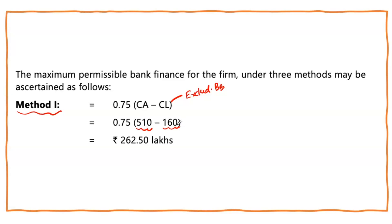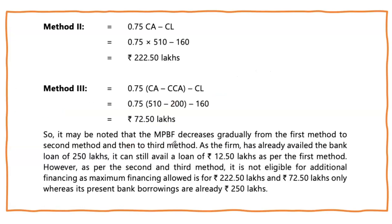The first method says 75% of the working capital gap can be funded by banks. So the working capital gap of 350 multiplied by 75% gives us 262.50 lakhs. This is the eligible bank finance as per Method 1.